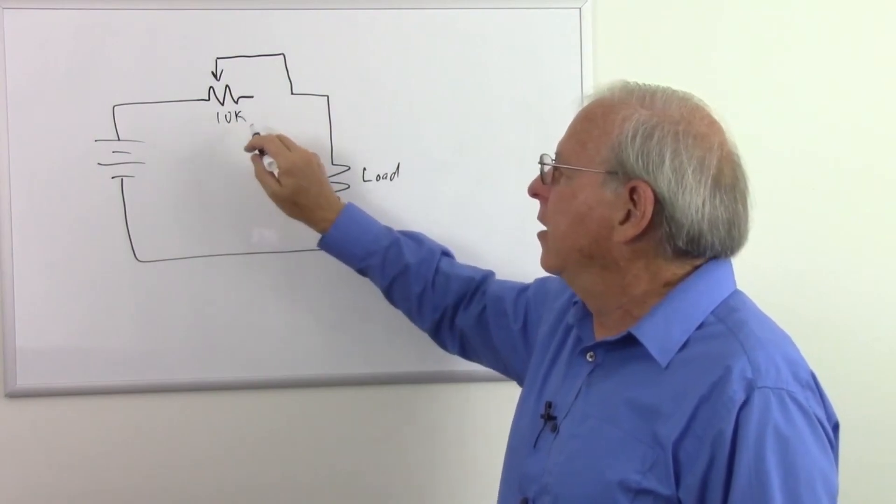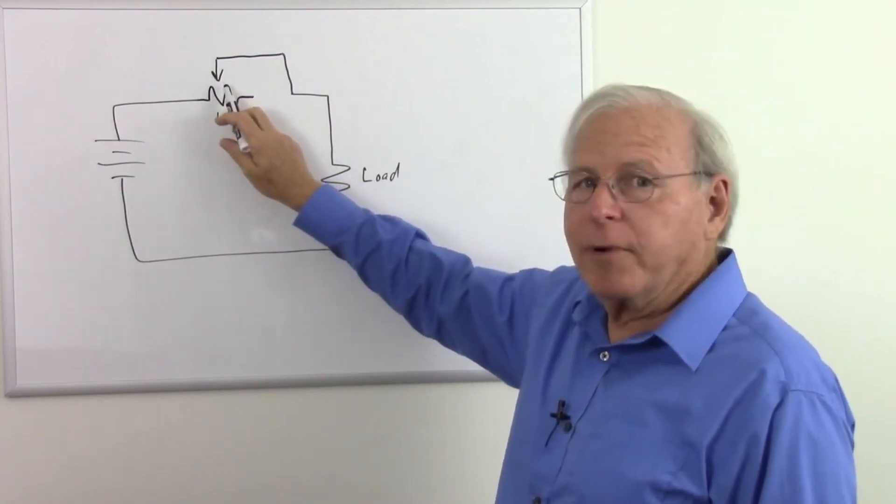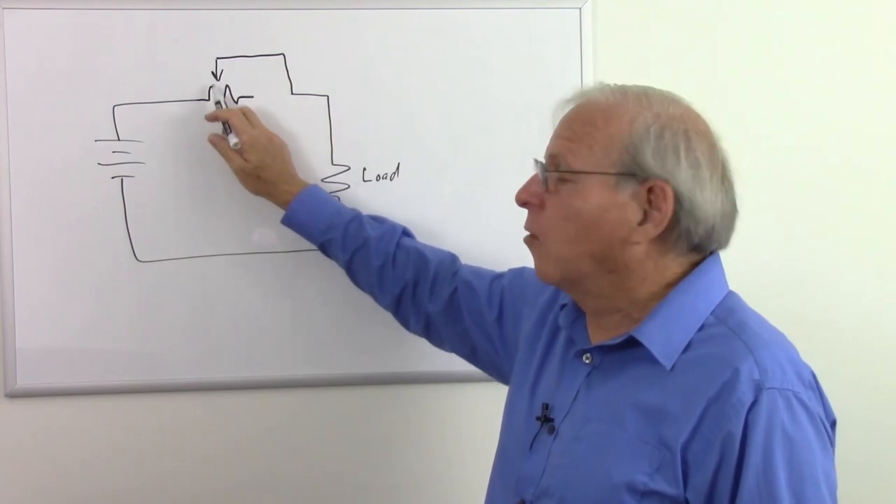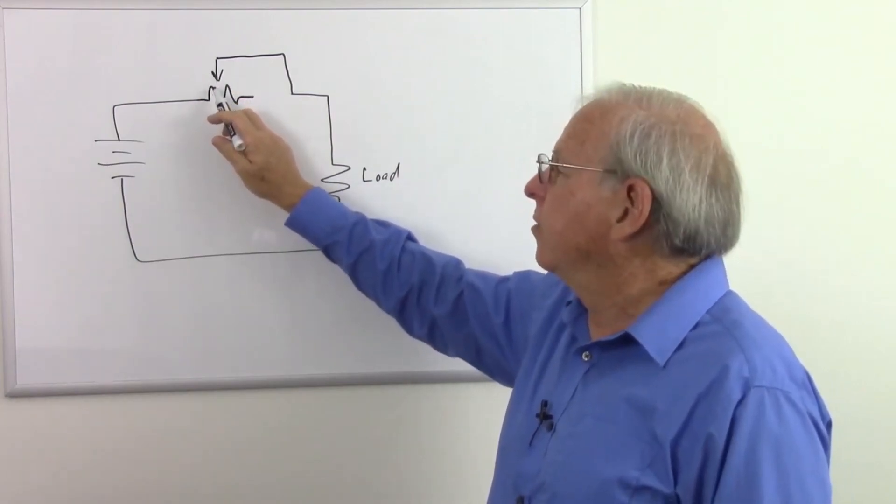So if this is a 10k variable resistor, if I have the wiper in the middle, I'd have about 5k. If I have it a quarter of the way over, it'd be about 2.5k.